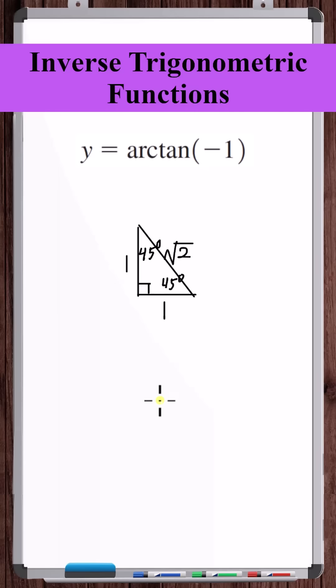And since arc tangent is going to output an angle only in the first or fourth quadrant, well, tangent is positive in the first quadrant, negative in the fourth quadrant, so this angle must be coming from the fourth quadrant. And it's going to have a reference angle of 45 degrees.